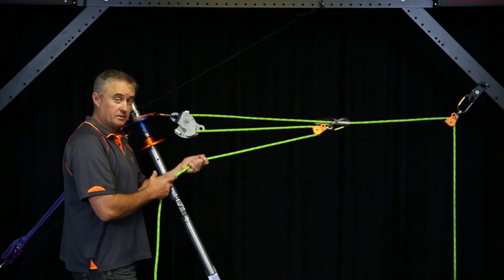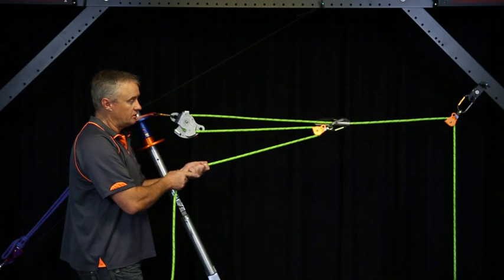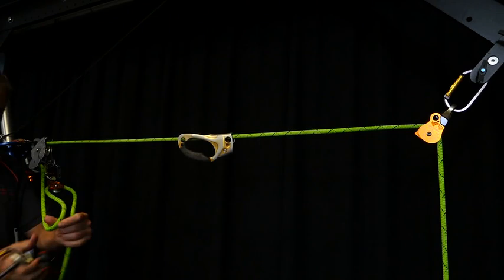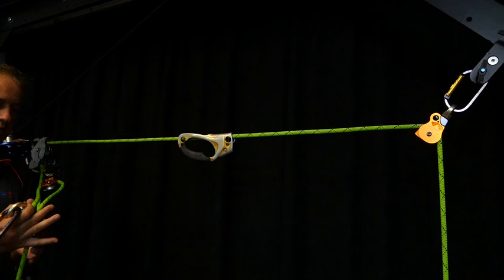So if we found that a three to one wasn't enough to haul that load up smoothly, we would have to increase the mechanical advantage. So let's change this three to one into a simple five to one. So to do that we are going to introduce a double sheave pulley.